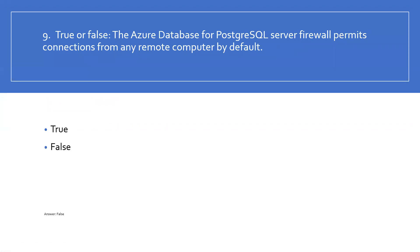Question 9 — True or False: the Azure Database for PostgreSQL server firewall permits connections from any remote computer by default. The server firewall prevents all access until you specify which computers have permission. You can specify individual IP addresses or a range of IP addresses. So False is the right answer.